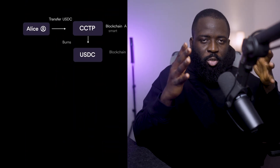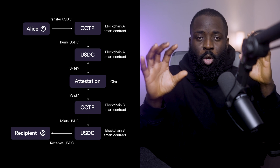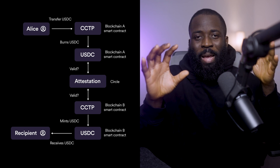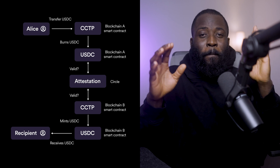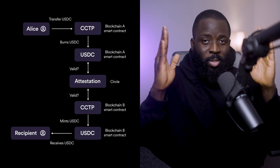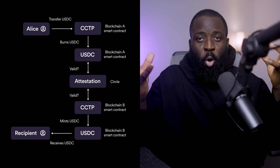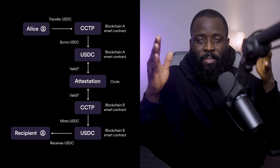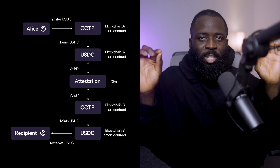These methods can be slow, introduce extra risk, and complicate the process. But cross-chain transfer protocol, also known as CCTP, developed by Circle, solves this by letting Alice burn USDC on blockchain A and mint the same amount on blockchain B, all natively. This makes transfers more efficient by reducing liquidity fragmentation and it eliminates unnecessary risk.